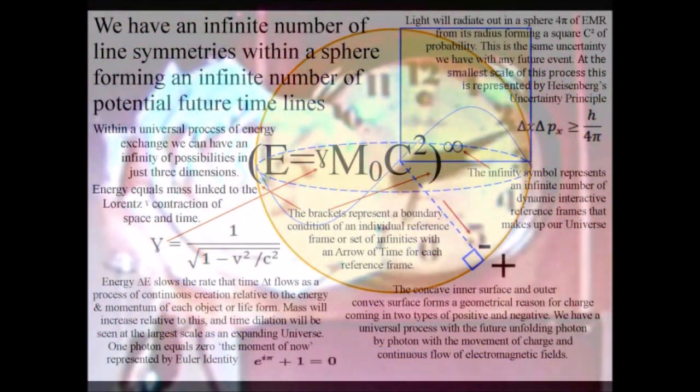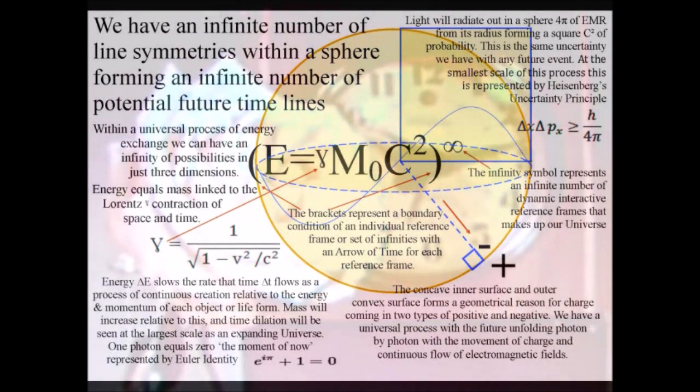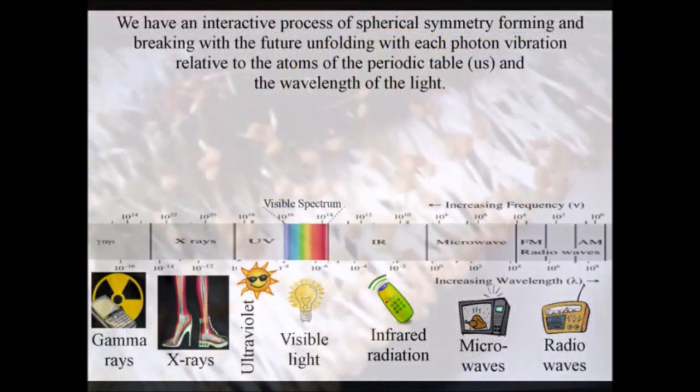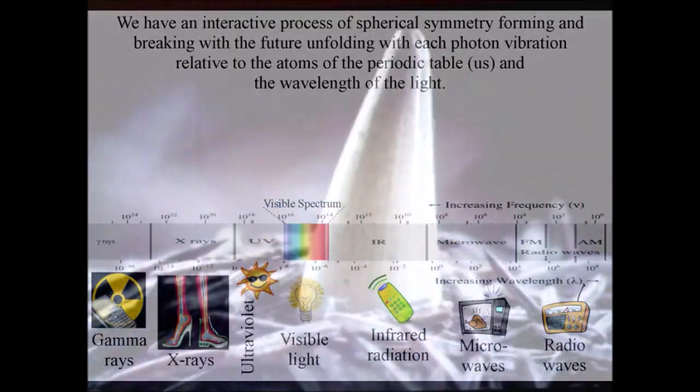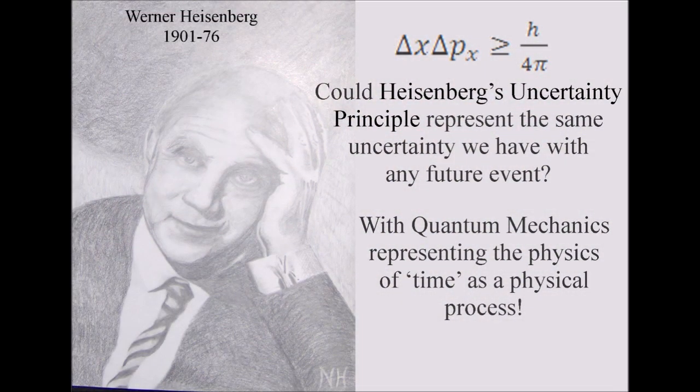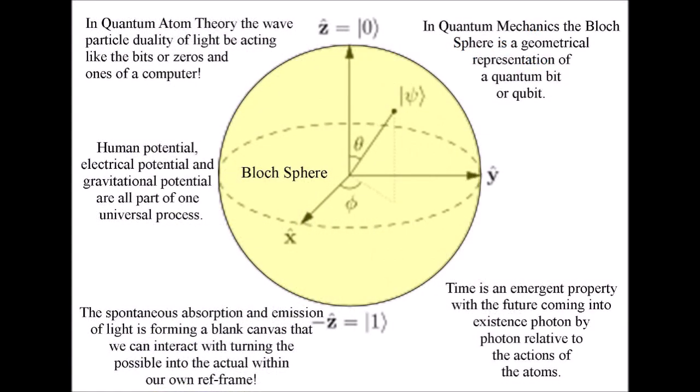Relative to each object or life form, the forward momentum of light and the forward passage of time are part of the same process formed by the spontaneous absorption and emission of light. We have an uncertain future coming into existence with the exchange of photon energy.